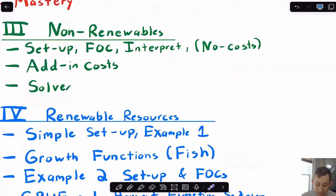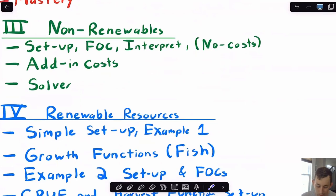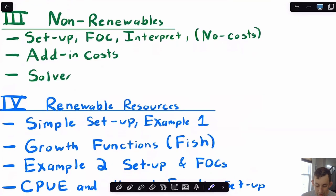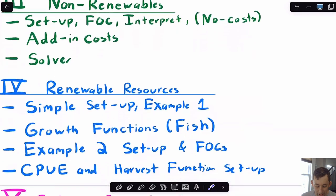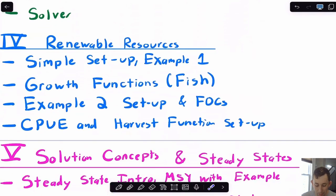Then we're going to start applying that to non-renewable resources. We're going to have a running example. We're going to start with just a basic setup. We'll take and interpret first order conditions. We'll do some costs and then we'll use Solver to verify our solution. Then we'll move on to that same running example. We'll make it sort of a renewable resource instead of a non-renewable resource.